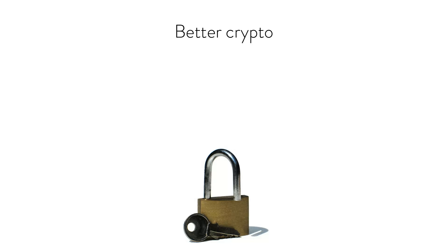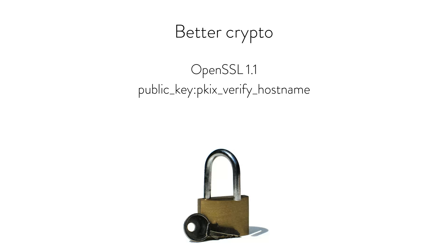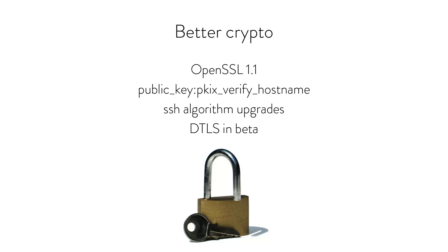Crypto also saw an improvement, which is quite welcome. They upped the version of supported OpenSSL to 1.1. We all know there have been lots of improvements and work on OpenSSL in the last couple of years, so it's good to see that being kept up. They've added hostname verification to SSL/TLS connection setups, which is really good. SSH algorithms have also been updated — older, less secure algorithms for crypto have been dropped, and newer, stronger ones have been adopted. OTP actually comes with support for an SSH server and client built right in, which is awesome, and this just makes it a little bit more secure.